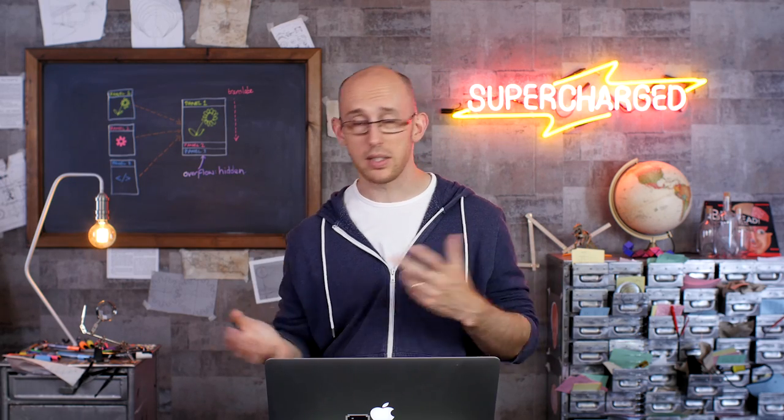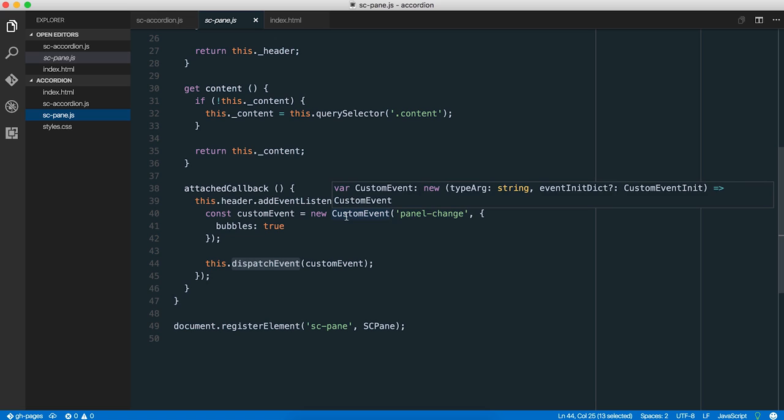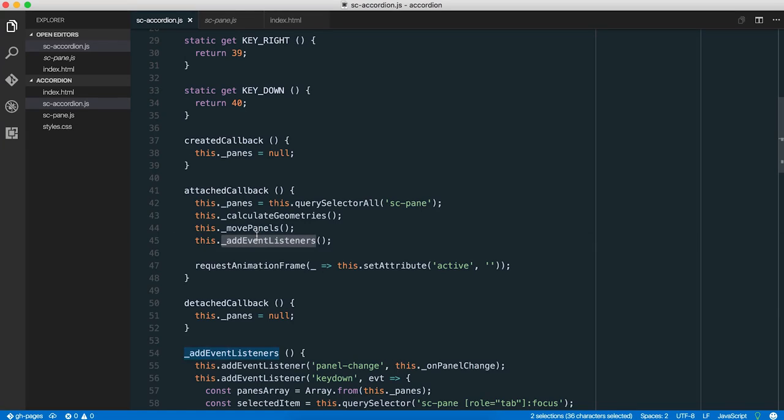Now, if you've never come across custom events before, they're brilliant. What they do is they act like a normal event, except that you get to name it, and you get to set things, like whether it bubbles or it's cancelable, all that kind of stuff. Here, we're using one called PanelChange, and we're going to say that it's bubbling up through the DOM, which is great because we want to delegate the handling of the PanelChange up to the accordion element itself, which you will notice in the event listeners.